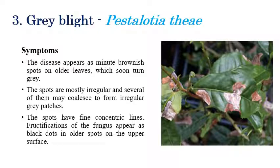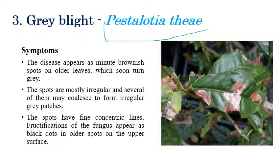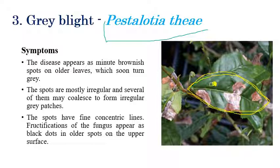Gray blight is caused by Pestalotiopsis theae. The most important symptom is that the disease mainly appears on older leaves, not younger leaves. Initially, small brown color spots can be seen on the older leaves. Over time, they slowly turn into gray in color.